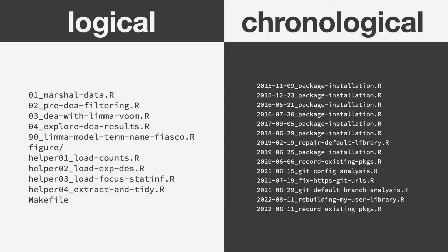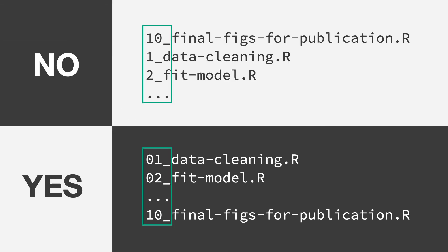Here are two examples of useful sort order: logical and chronological. On the left are files from a small data analysis pipeline that basically sort in order of execution. On the right are some ad hoc housekeeping scripts where I record the date I did a little piece of work. I want to put in a plug for left padding numbers so that you don't end up in the sad situation you see up top where the last script in a pipeline appears before the first script.